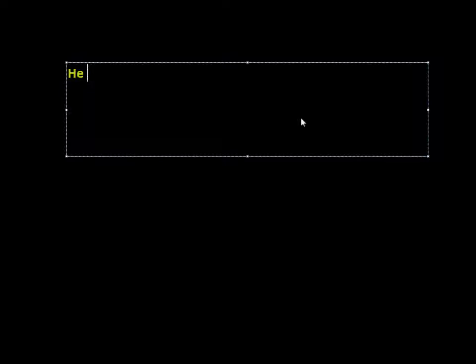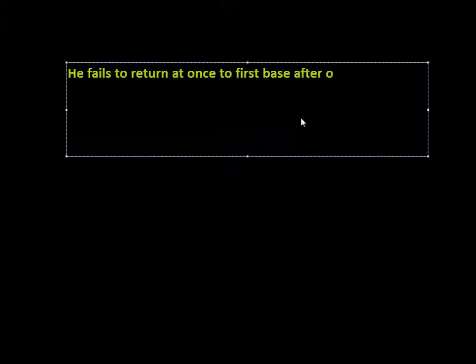Last time we looked at four; this time we're going to look at three. The first two of these involve failing to touch a base or over-sliding a base and failing to go back. The first one is that a runner is out when he fails to return to first base after sliding, over-sliding, or over-running that base.